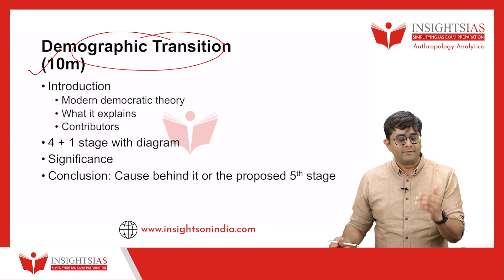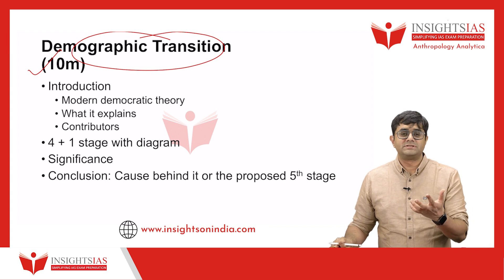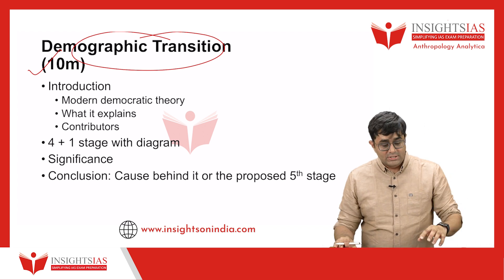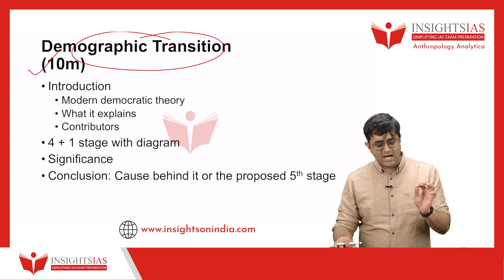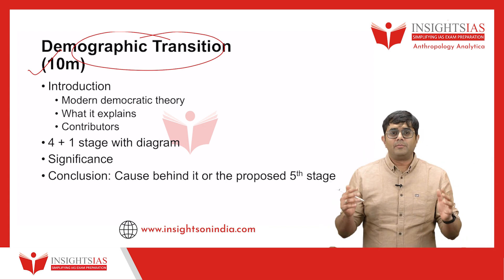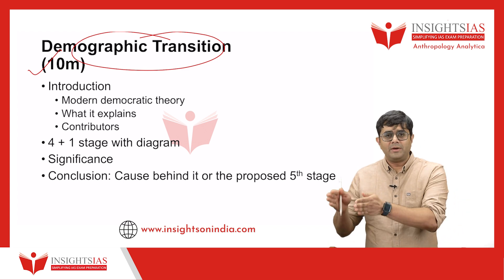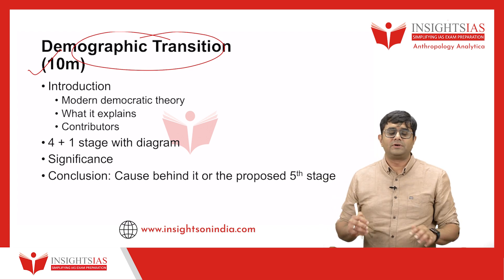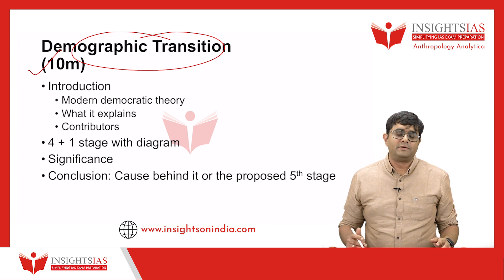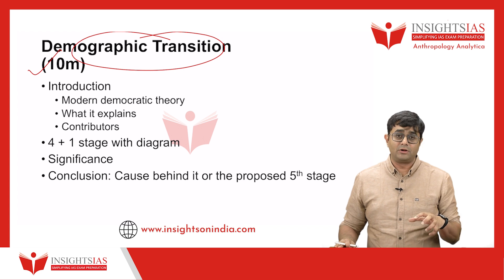In a 10-marker, the more dimensions you add the more marks you are going to get. You need to define it, write its features, draw a diagram, write about the contributors to the concept, and so on. For this question, demographic transition is asked simply as a 10-marker and you are expected to write everything about demographic transition and all its dimensions — they are not focusing on any one particular aspect.